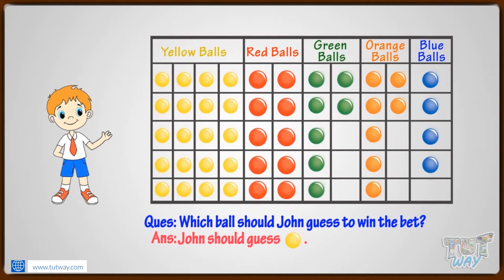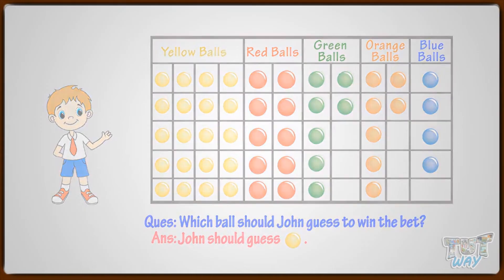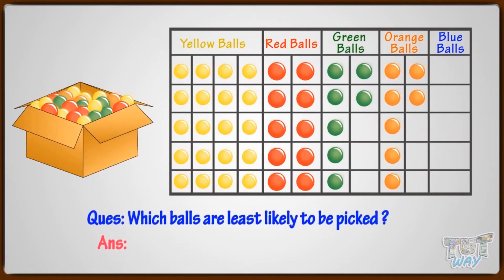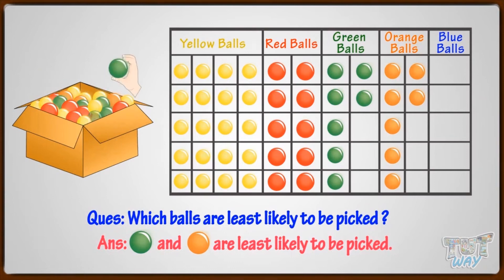If all the blue balls are removed from the box, which balls are least likely to be picked? If blue balls are removed, green balls and orange balls will be the least in number. So, they are least likely to be picked.